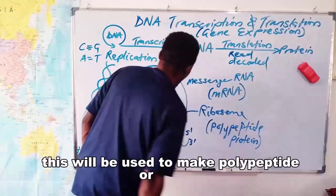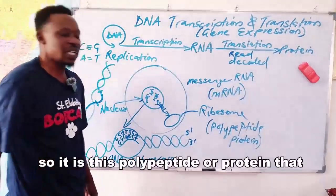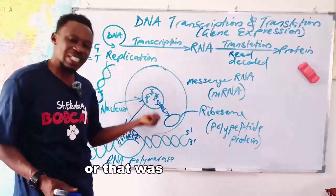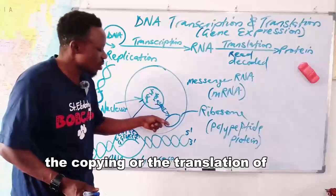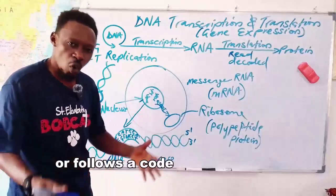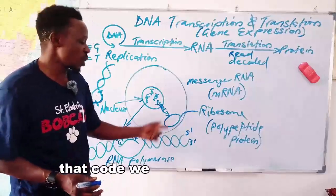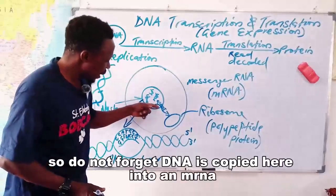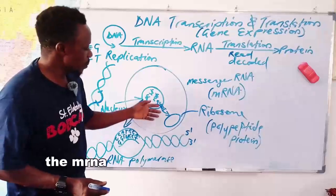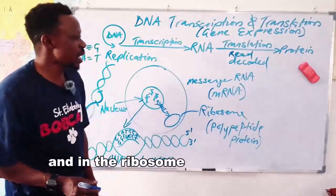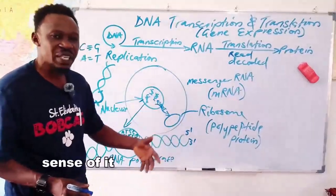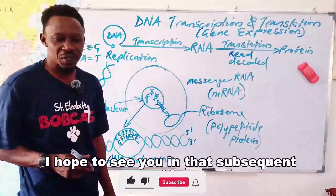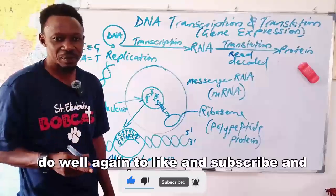This message will be decoded in the ribosome to make a polypeptide or protein — this polypeptide or protein that becomes the expressible unit of the message that was in the DNA. The translation of this message follows a rule or code, which I shall be considering in a subsequent video — we call it the genetic code. So: DNA is copied into an mRNA, the mRNA carries the message to the ribosome, and in the ribosome the message is decoded in a process governed by the genetic code. I hope to see you in that subsequent video — do well to like, subscribe, and share. Thank you.